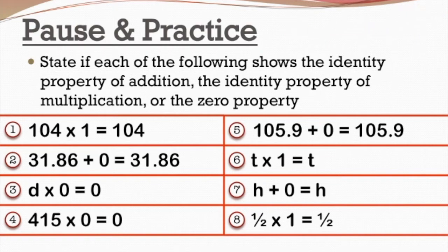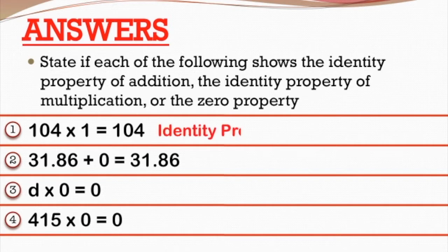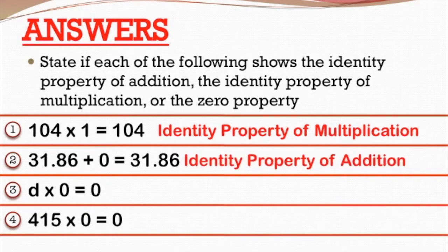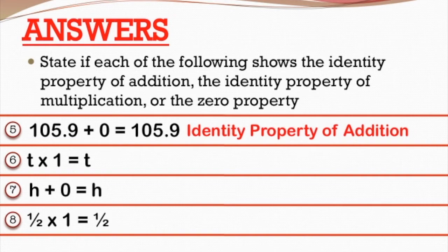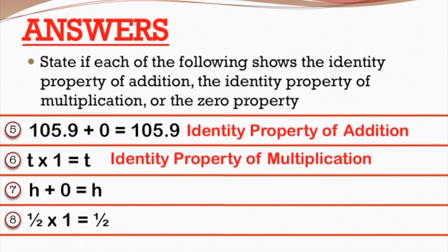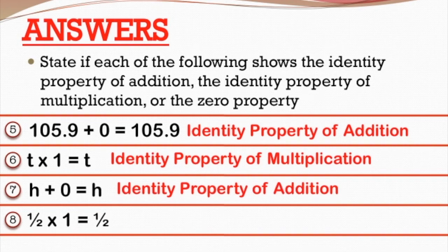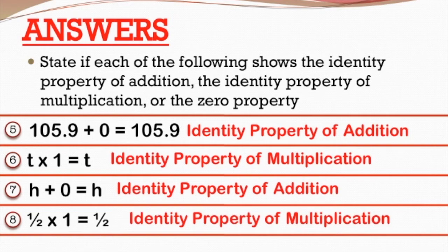Let's take a look at our answers. Number 1 is the identity property of multiplication. Number 2 is the identity property of addition. Number 3 is the zero property. Number 4 is the zero property. Number 5 is the identity property of addition. Number 6 is the identity property of multiplication. Number 7 is the identity property of addition. And number 8 is the identity property of multiplication.